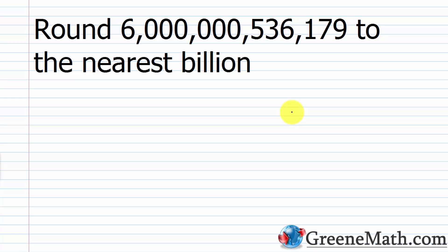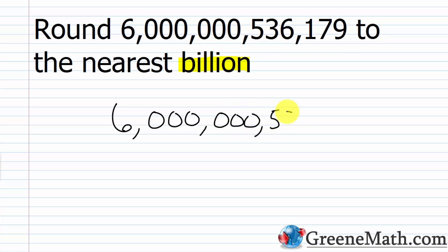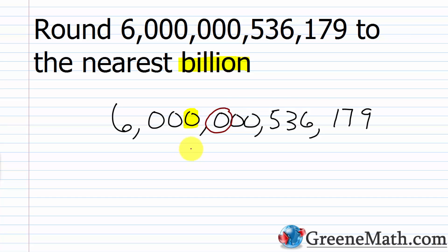For the final problem, we have 6,536,179, and we want to round this to the nearest billion. Rounding to the nearest billion: 6,536,179. The billions place is here — it's this 0. The digit to the right of that is a 0 as well, so that falls in the category of 4 or less. When this happens, we leave the digit in the roundoff place unchanged.